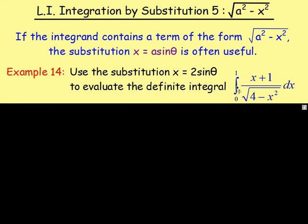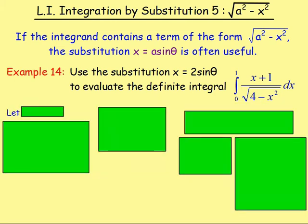Evaluate this integral: (x + 1) over the square root of (4 minus x squared) dx, between 0 and 1. The first thing we want to do is let x equal 2 sine theta.